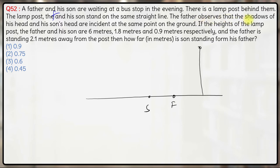The father observes that the shadows of his head and his son's head are incident at the same point. That means if the shadows are incident at this point, the lamp post light will come at this direction.